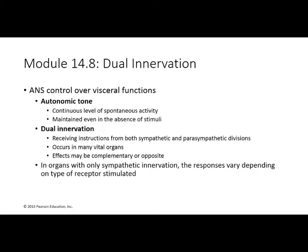There is the concept of tone — in the nervous system, autonomic tone refers to how much continuous activity there is. It's maintained all the time; you're never completely shutting down the autonomic nervous system. There's always some influence on your organs. Most but not all organs receive dual innervation — signals from both sympathetic and parasympathetic divisions — though some organs only get one or the other.